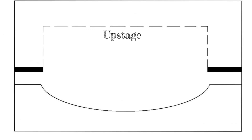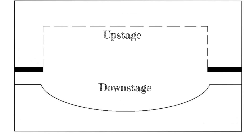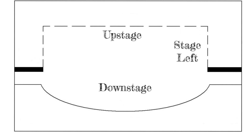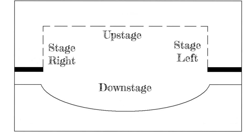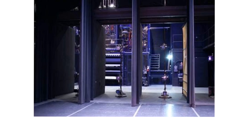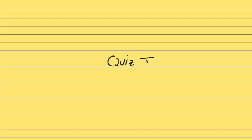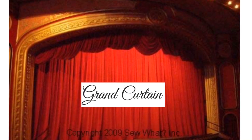The back of the stage is called upstage, and the front of the stage is called downstage. Left and right are based on the actor's left and right, so if you're standing on stage as an actor, your right is called stage right. There are many curtains used on a stage — the curtains on the side in the wings are called the legs.